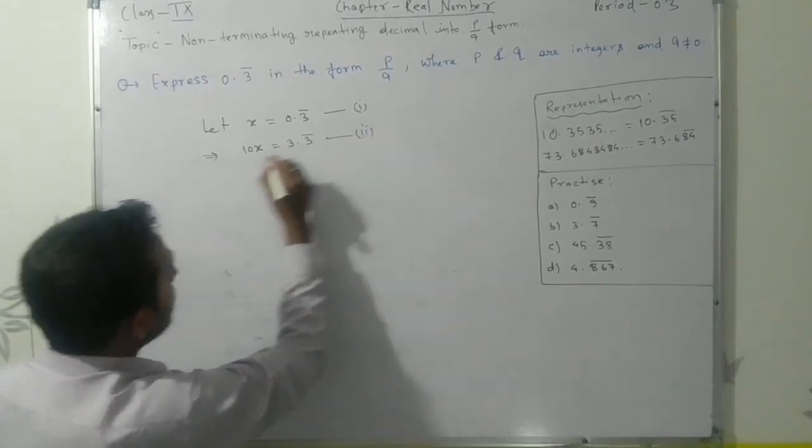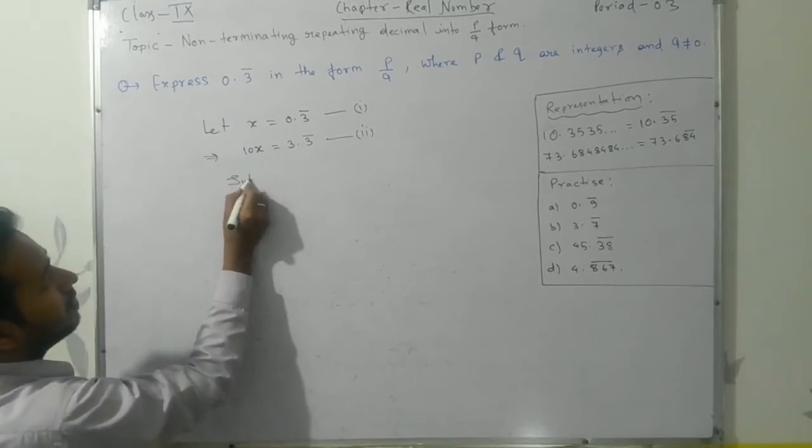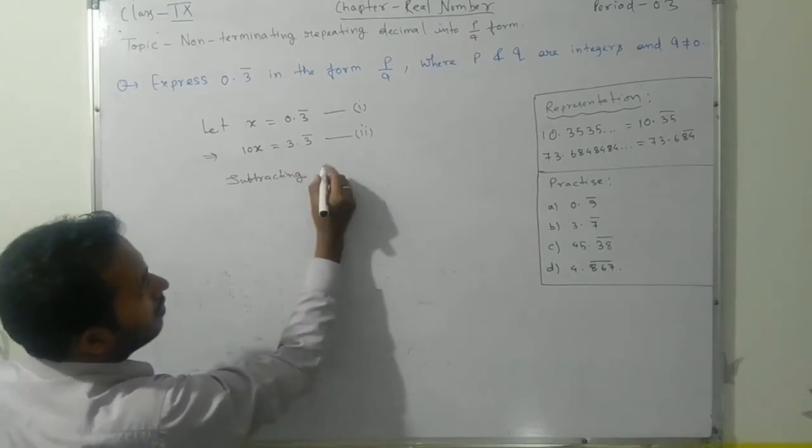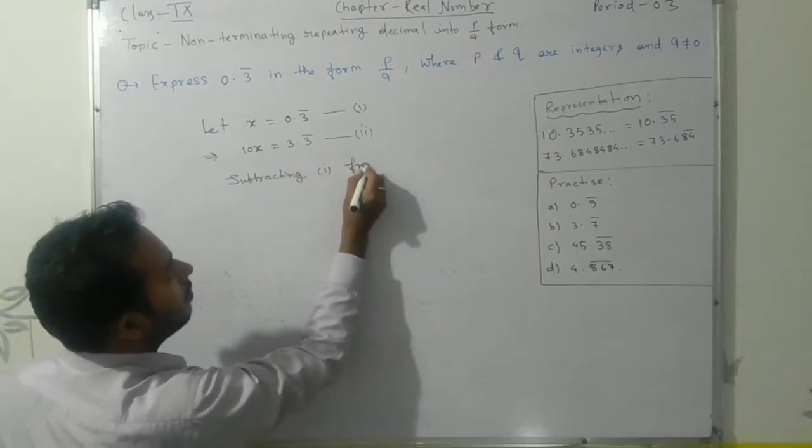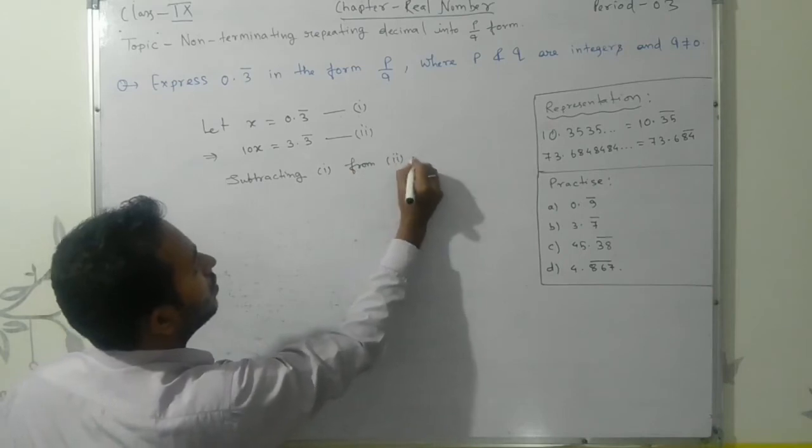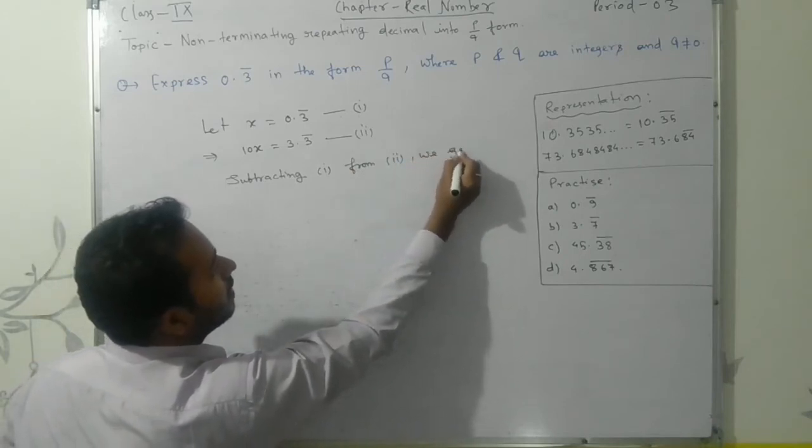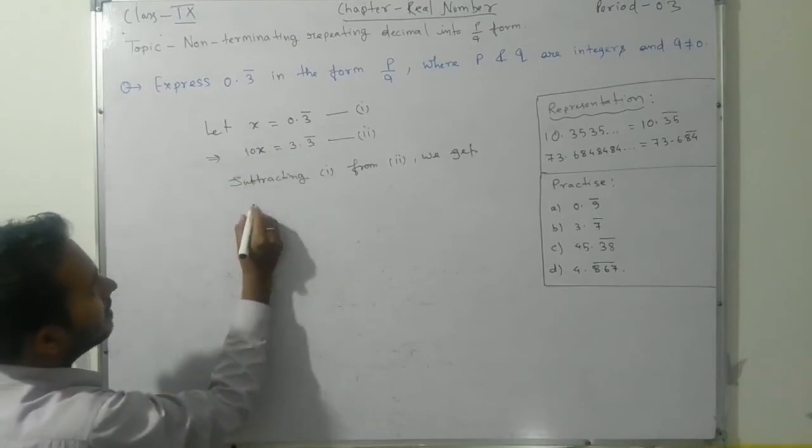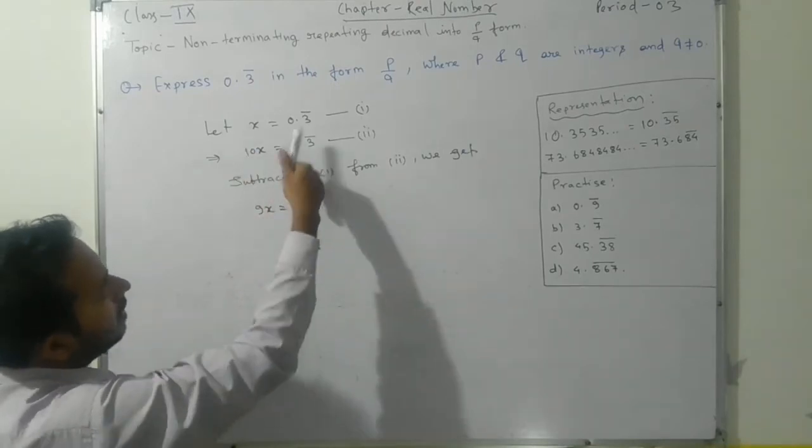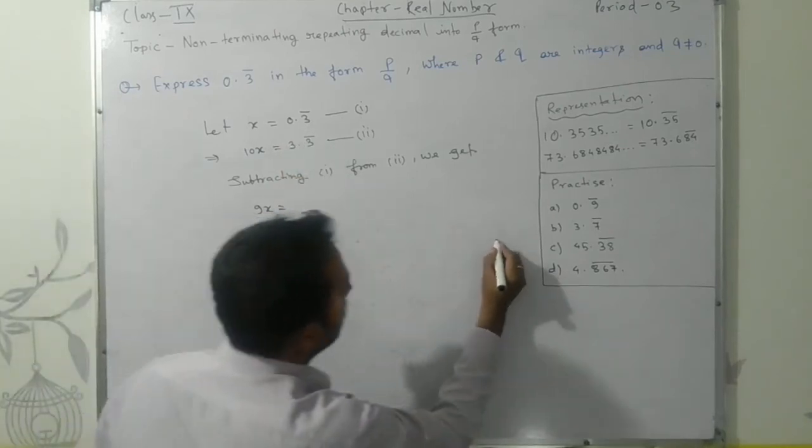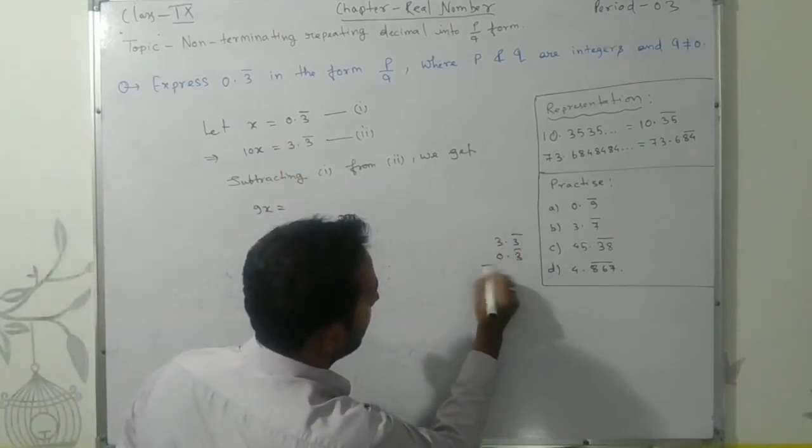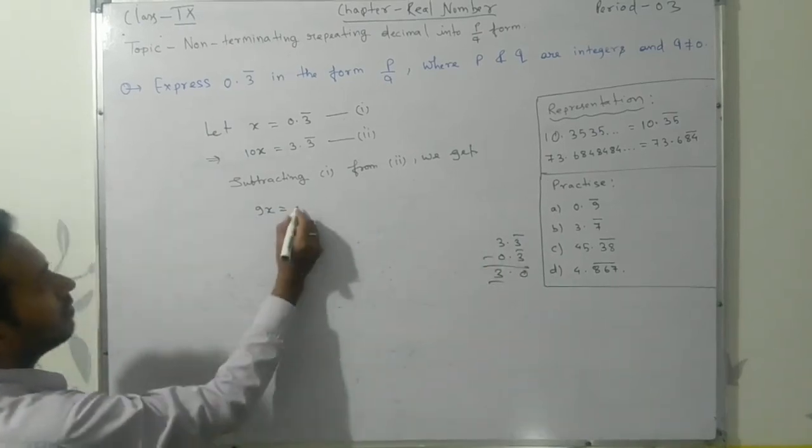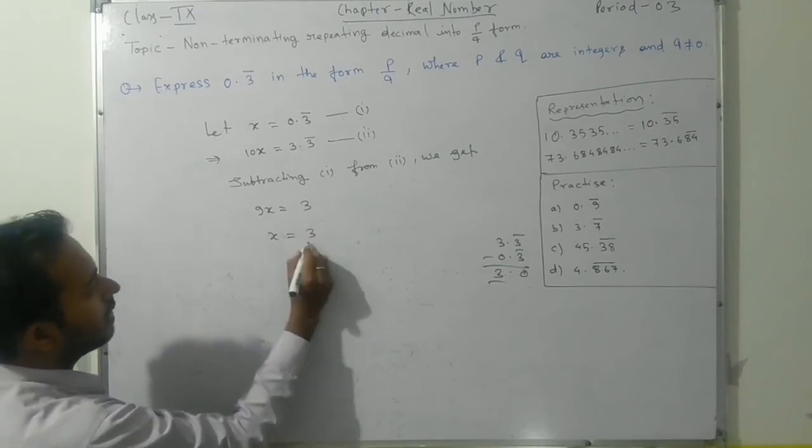Now subtracting equation 1 from equation 2, we get 10x minus x, which equals 9x. On this side, 3.3 bar minus 0.3 bar equals 3. So 9x equals 3, therefore x equals 3/9.